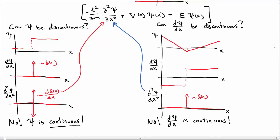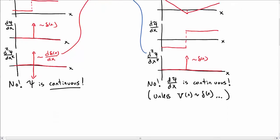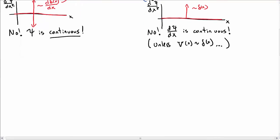So we say that the derivative of the wave function must be continuous. Actually, it's a little bit of a cheat — you can do this if the potential is a delta function, and then you can balance this delta function term for the second derivative, and we'll talk about that in another video.